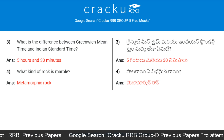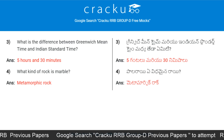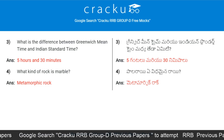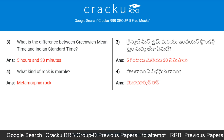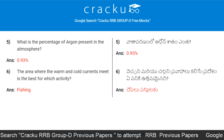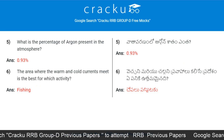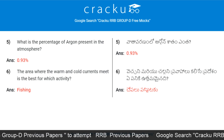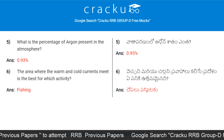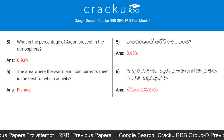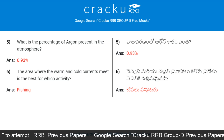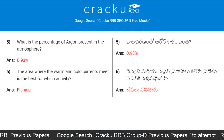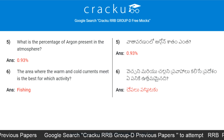What kind of rock is marble? Metamorphic rock. What is the percentage of argon present in the atmosphere? 0.93%.